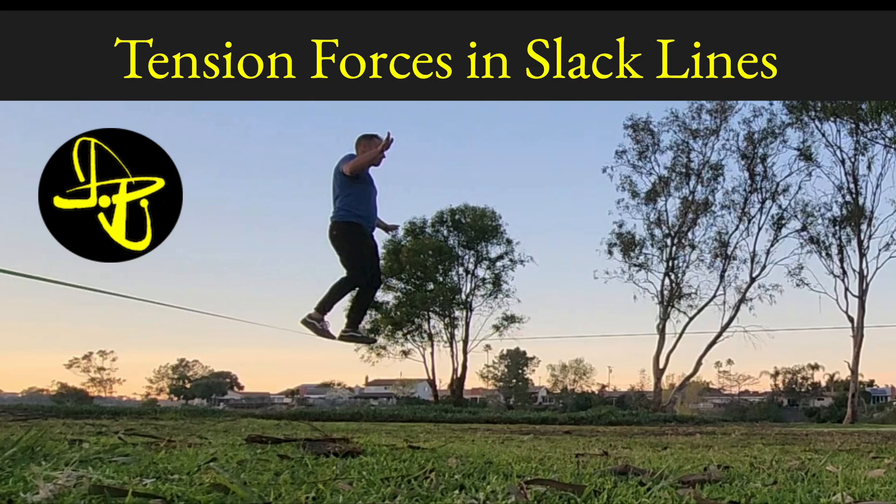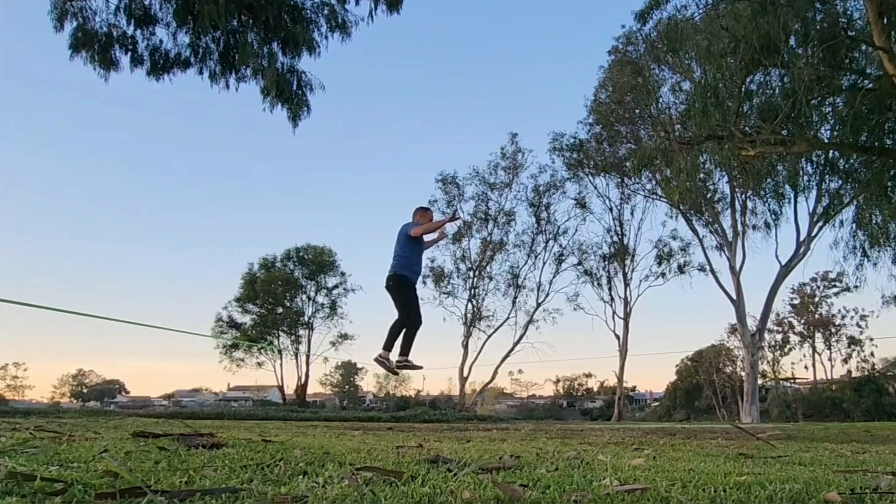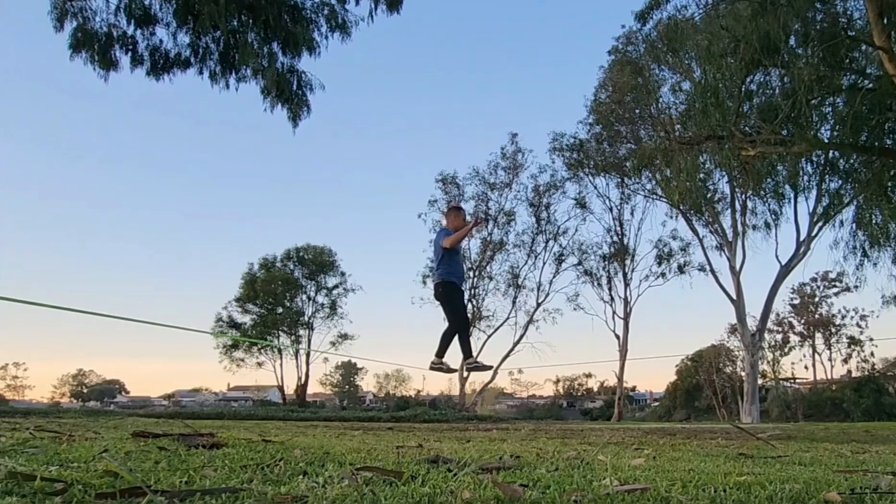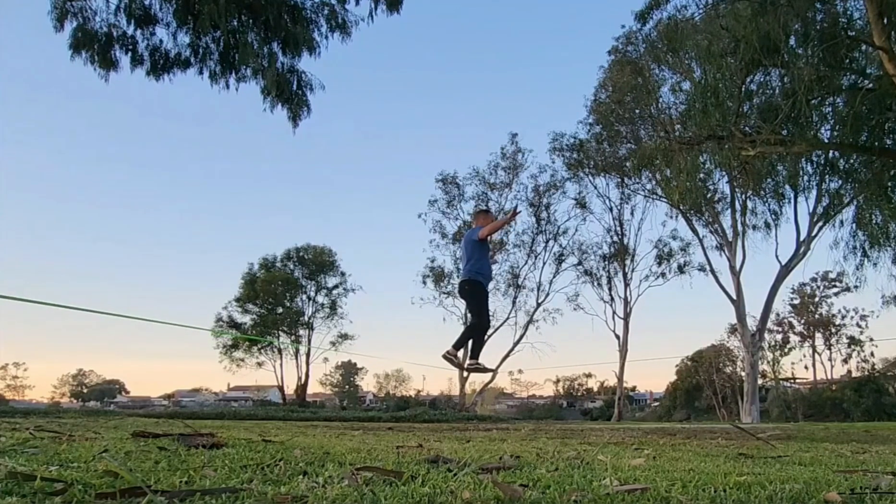We're going to look at the tension forces that build up when someone is walking a slackline. A slackline is very much like a tightrope. It's a belt that you tighten between two trees using a ratchet mechanism.